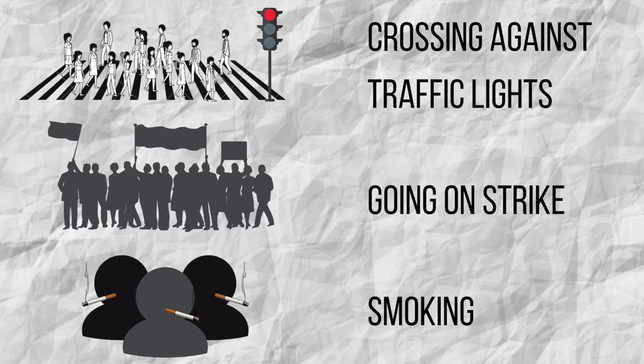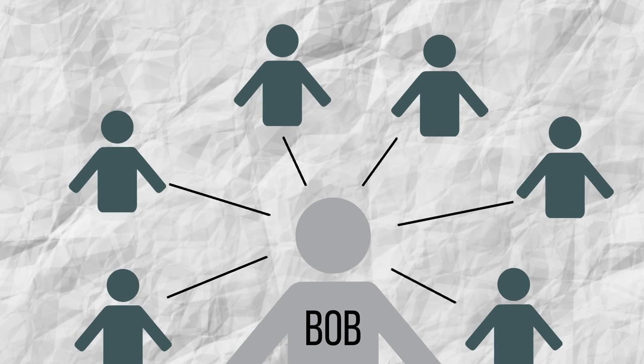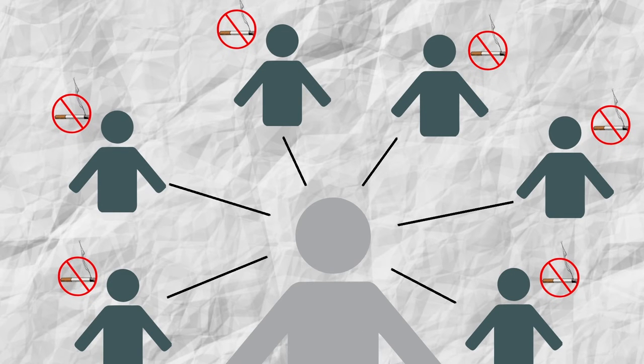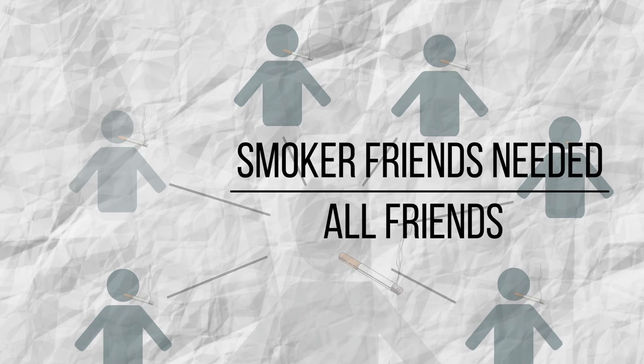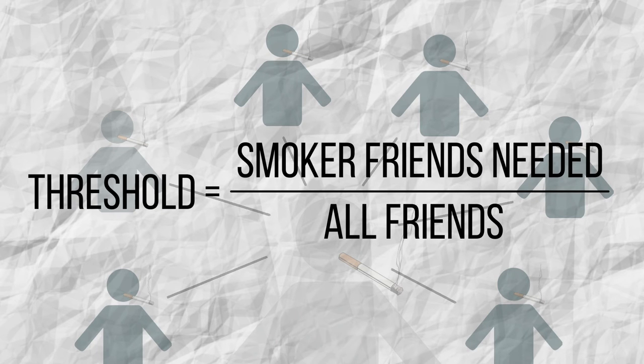To better understand this model, let's explain the last example in detail. Let's take Bob and his six friends. If none of his friends smoke, Bob will not smoke either. However, if all of his friends smoke, Bob will also start smoking. Where's the limit? How many smoking friends does it take for Bob to give in to temptation? The ratio of smoking friends needed to the total number of friends is the threshold value.